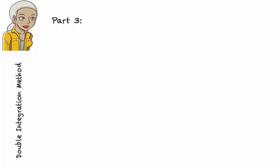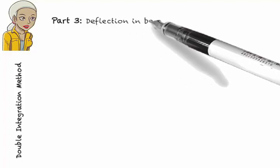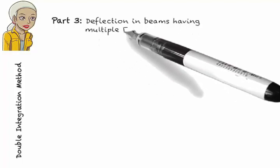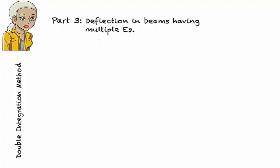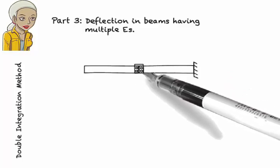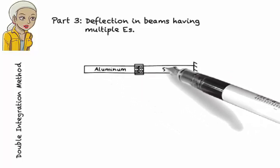Part 3. This example illustrates how to use the double integration method to find a deflection equation for a beam consisting of multiple segments, each having a unique modulus of elasticity. We wish to formulate a deflection equation for a beam made up of two segments: an aluminum segment and a steel one.